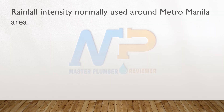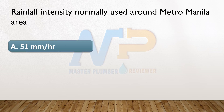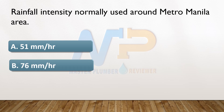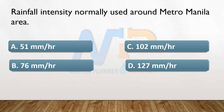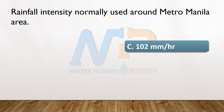Rainfall intensity normally used around Metro Manila area. A. 51 mm per hour. B. 76 mm per hour. C. 102 mm per hour. D. 127 mm per hour. The answer: C. 102 mm per hour.